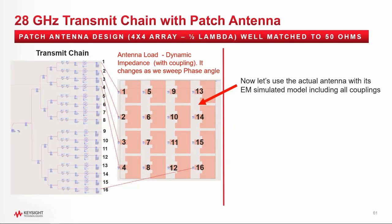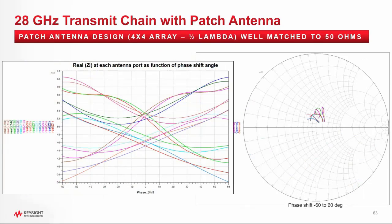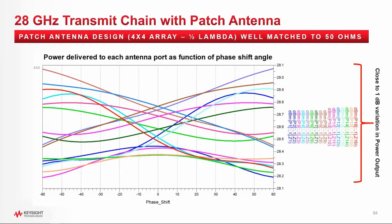But now — and this is what we are all waiting for — I am including the actual antenna EM simulation results, which includes the impedance and also includes the coupling. Look at the dynamic impedance on the Smith chart changing with the phase angle due to the coupling between the patches. And look at the output power dynamically changing relative to the phase angle. This is what I wanted you to see and understand — what dynamic impedance is and why it is important and should not be underestimated. This slide shows the dynamic output power change, which shows about a 1 dB variation in output power. Note that sometimes you could get 3 or 4 dB power variation, or even higher loss known as a blind spot.